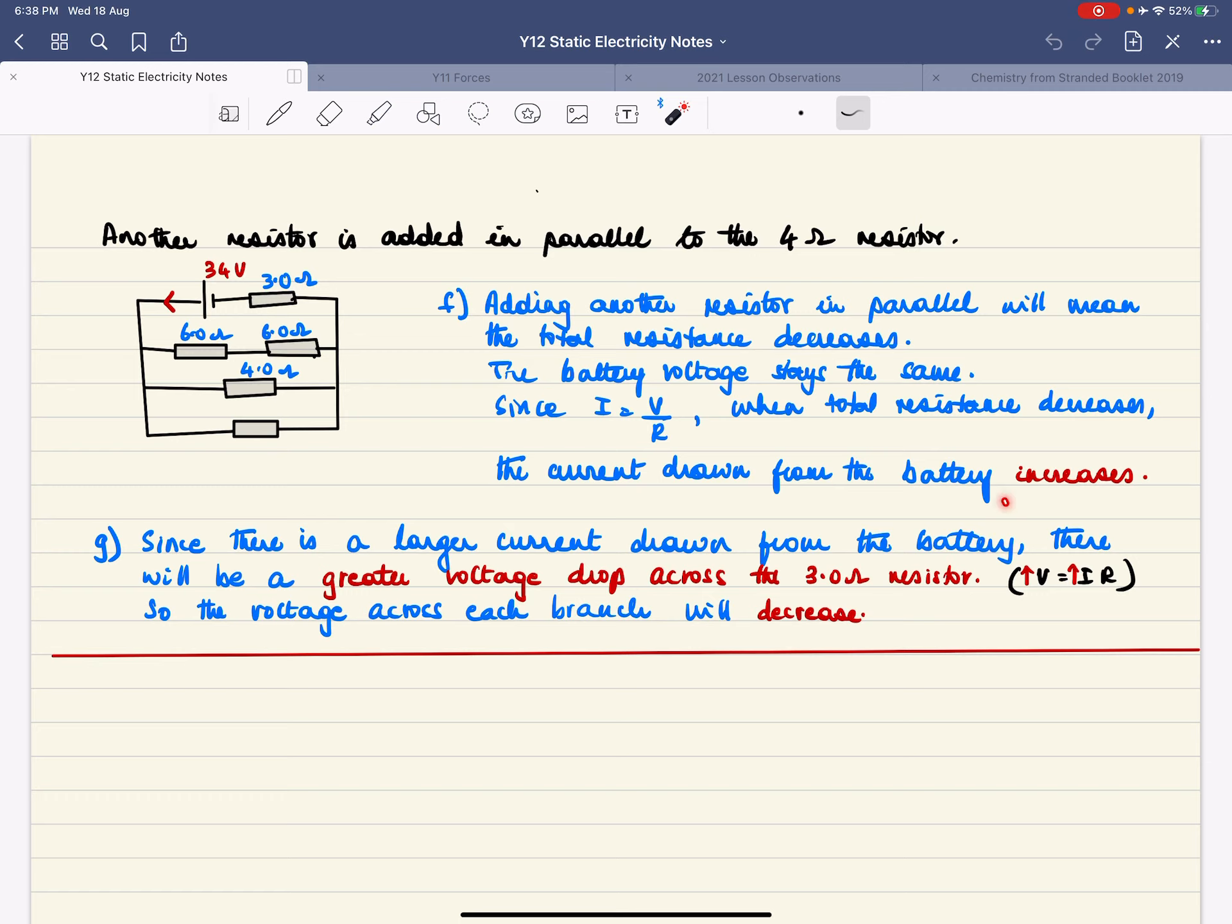So that's the answer and then it says what happens to the branch voltage. Now the voltage across each branch is the same and the voltage across each branch is battery voltage minus the voltage across the 3 ohm resistor. Now the battery voltage is the same however the voltage across the 3 ohm resistor is going to increase because the current is bigger. So 34 minus a larger voltage is going to give you a smaller voltage left for each branch. So that is why the branch voltage will decrease.